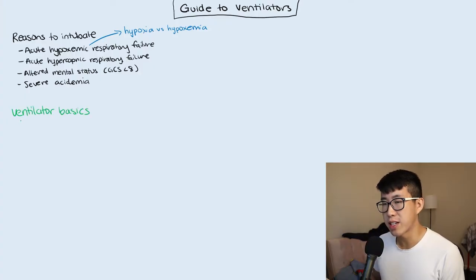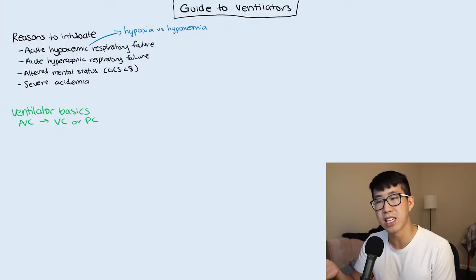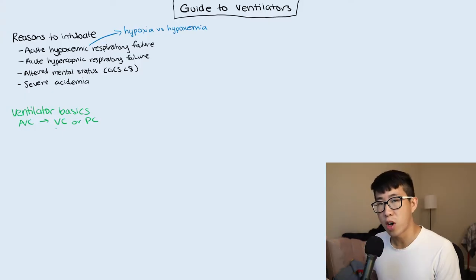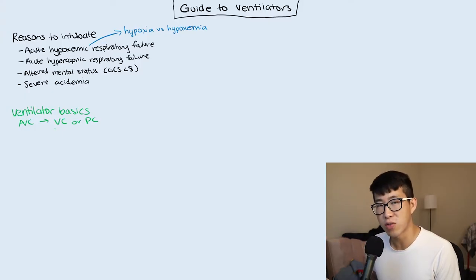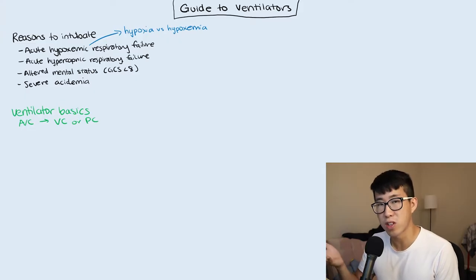After a patient is intubated, the most common modes you'll see are assist control, either volume control or pressure control. Assist control means the machine will breathe for the patient at a set rate, and if the patient wants to breathe more, they can initiate their own breaths and the machine will detect that and deliver a machine breath. Volume control means you set the tidal volume but pressure can vary, and pressure control means you set the pressure but tidal volume may vary.